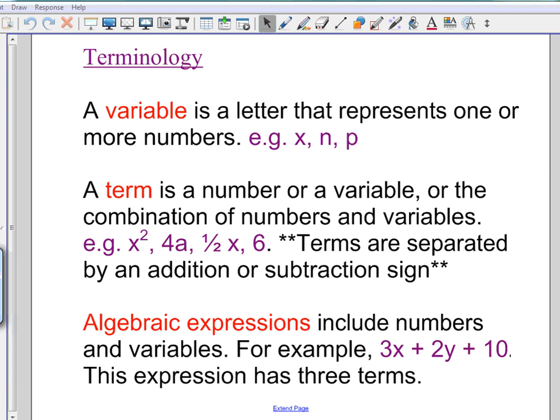So the first term that comes up is variable. And basically a variable is just a letter, and the letter represents a number. The most common variable is x, but there's lots of other ones, and you can even have exponents in your variables, so like x squared or x cubed, those are also variables.